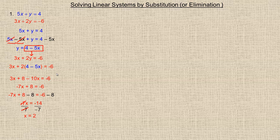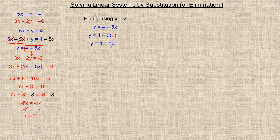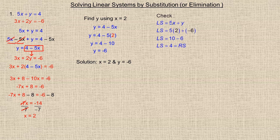Now I need to find y. I substitute x equals 2 into the equation y equals 4 minus 5x. So y equals 4 minus 5 times 2, which is 4 minus 10, giving y equals negative 6. So I think the solution is x equals 2 and y equals negative 6. Now let's check by substituting into both original equations, starting with 5x plus y equals 4.